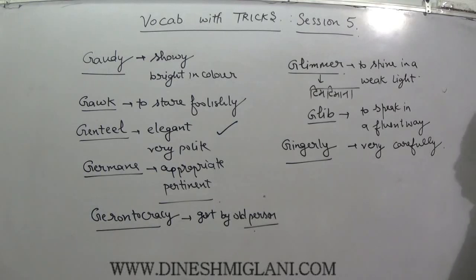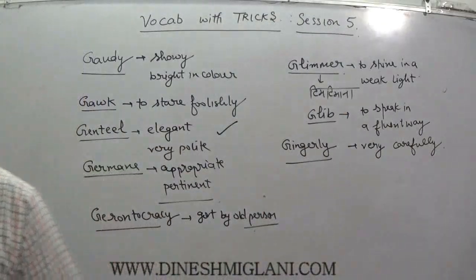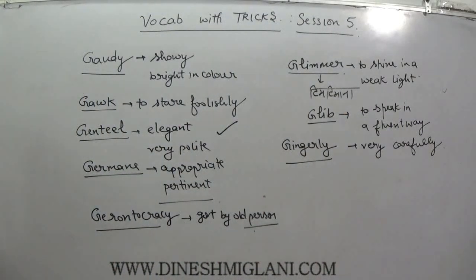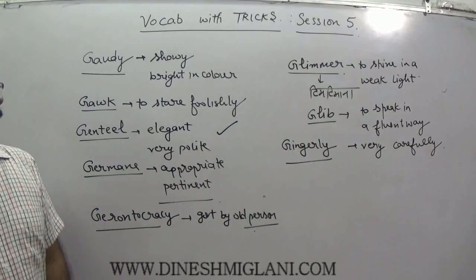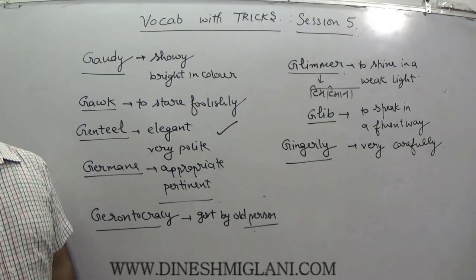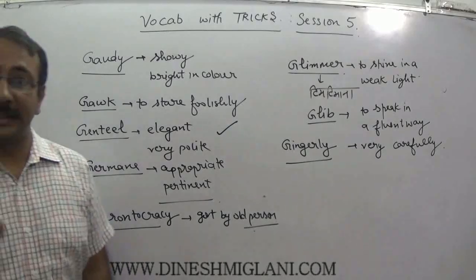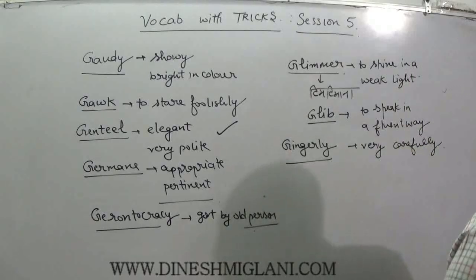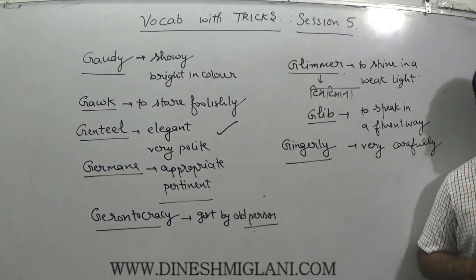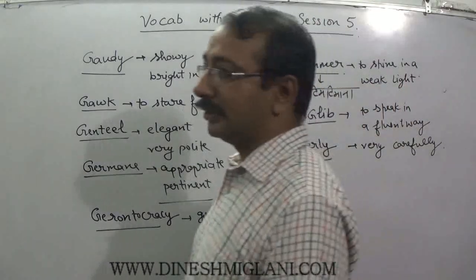Glib — Mirza Ghalib was a very good speaker, very fluent; glib means one who speaks in a very fluent way. Gingerly — taken from the root ginger (adrak); adrak is very spicy, so it has to be used very carefully. Gingerly means very carefully.